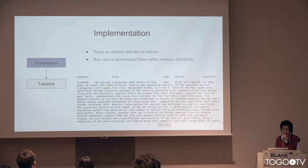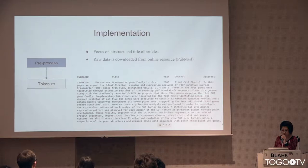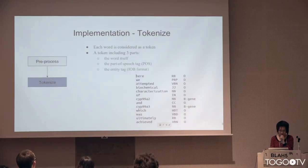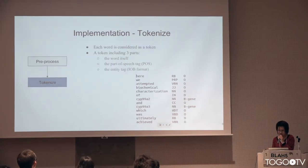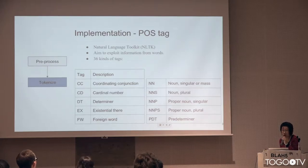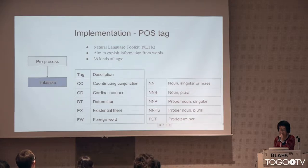Here is the implementation. The pre-process is to download the articles from PubMed using the abstract and title parts, followed by tokenization where each word is considered as a token. There are two kinds of tags used in their study. One is the part-of-speech tags; they used a toolkit called the Natural Language Toolkit, NLTK, which is based on Python and uses 36 kinds of tags.